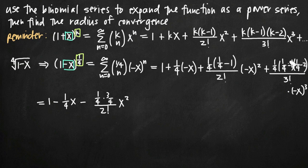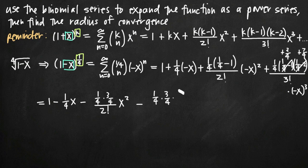For the third term, we have 1/4 minus 1 which is negative 3/4, and 1/4 minus 2 which is negative 7/4. These two negative signs cancel to become positive when multiplied together, but this term is also multiplied by (negative x) cubed, which gives a negative value. So pulling the negative out front, we get negative 1/4 times 3/4 times 7/4, all divided by 3 factorial times x cubed. We're going to have a negative value for every term except our first term, which is positive 1.